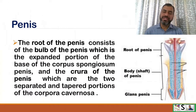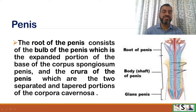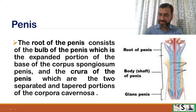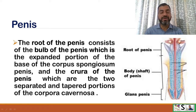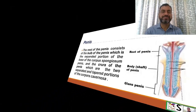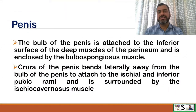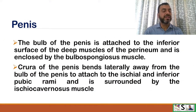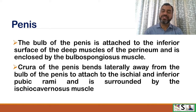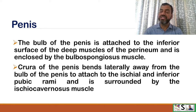The root of the penis consists of the bulb of the penis, which is the extended base portion of the corpus spongiosum, and the crura of the penis — two separated, tapered portions of the corpora cavernosa. The bulb of the penis is attached to the inferior surface of the deep muscles of the perineum and is enclosed by the bulbospongiosus muscle. The crura bend laterally away from the bulb and attach to the ischial and inferior pubic rami, surrounded by the ischiocavernosus muscle.